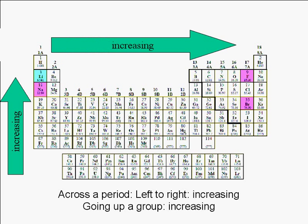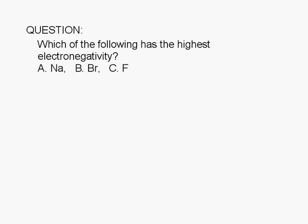Across a row, the trend from left to right is increasing. Therefore, fluorine is more electronegative than lithium, which is more electronegative than sodium. Therefore, of the three elements given, the most electronegative is fluorine.